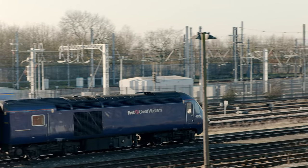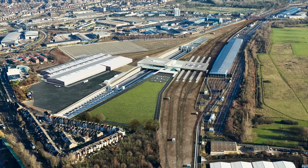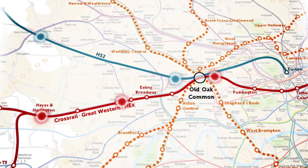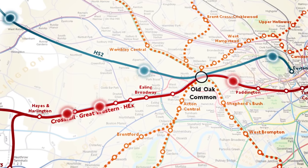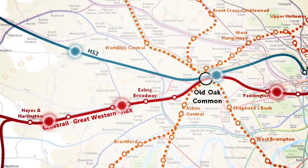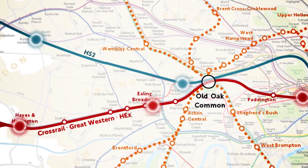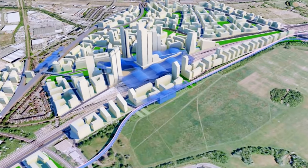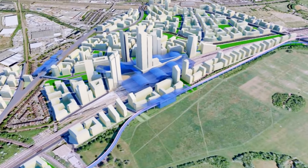By 2026, it's hoped that Old Oak Common will be at the conjunction of Crossrail and High Speed 2. The mayor has set up a development corporation which will transform the area and deliver 90,000 new jobs, 19,000 homes, together with schools, shops and leisure facilities.